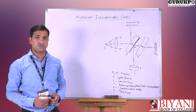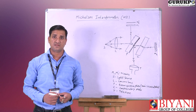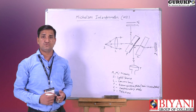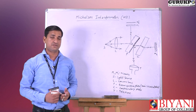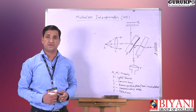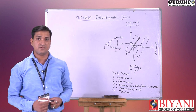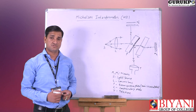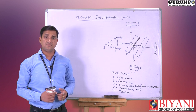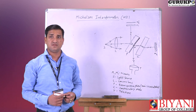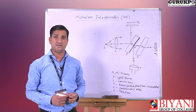Before starting this topic, we generally introduce the term interference. What is interference? Interference is the phenomenon when two waves of the same frequency and same amplitude, moving in the same direction, are superimposed — then the intensity is redistributed. It is maximum at some points and minimum at others. This redistribution of intensity is known as interference of light. Common daily life examples include soap bubbles and thin films between air and oil.